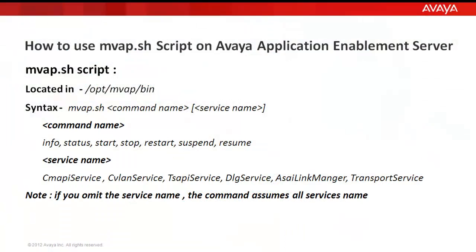mwap.sh script is located in /opt/mwap/bin directory. The syntax to execute the command is: mwap.sh command_name service_name.